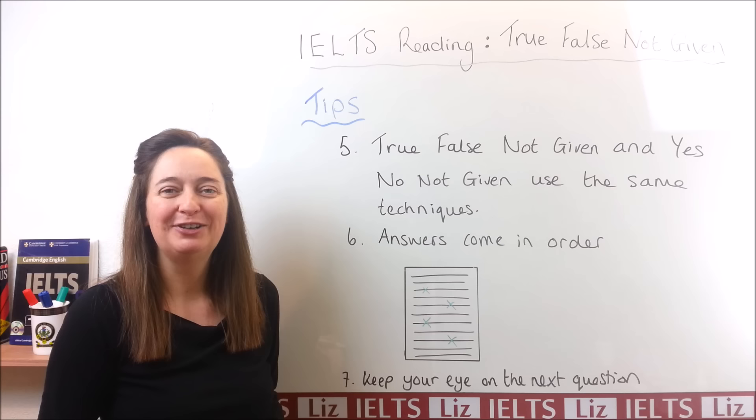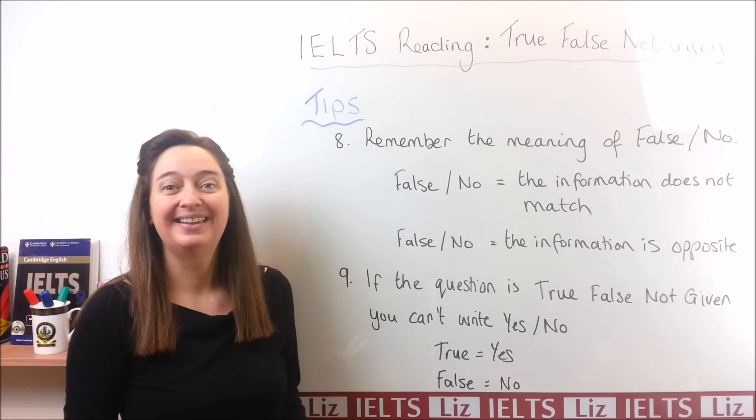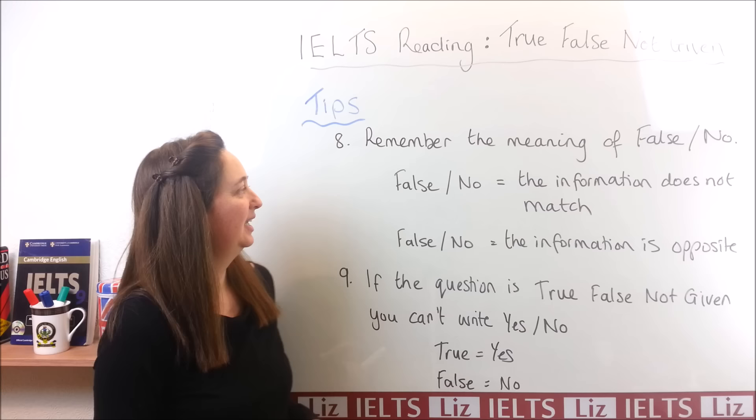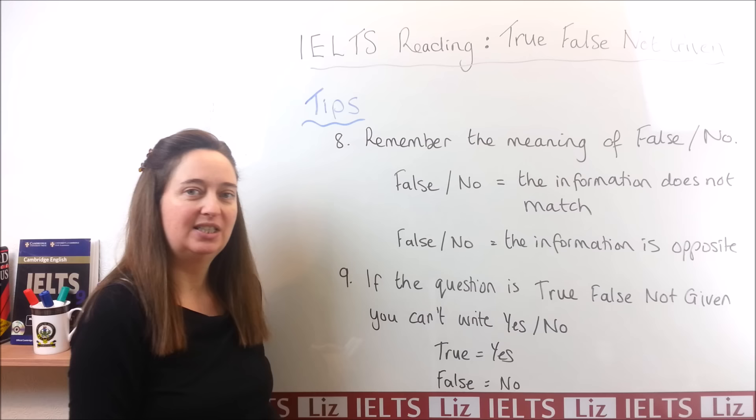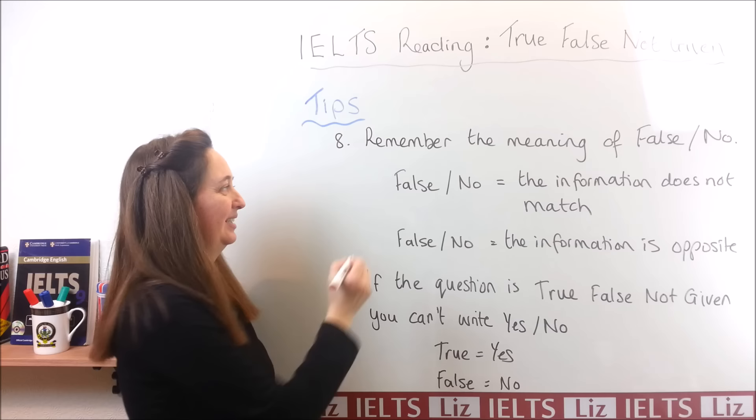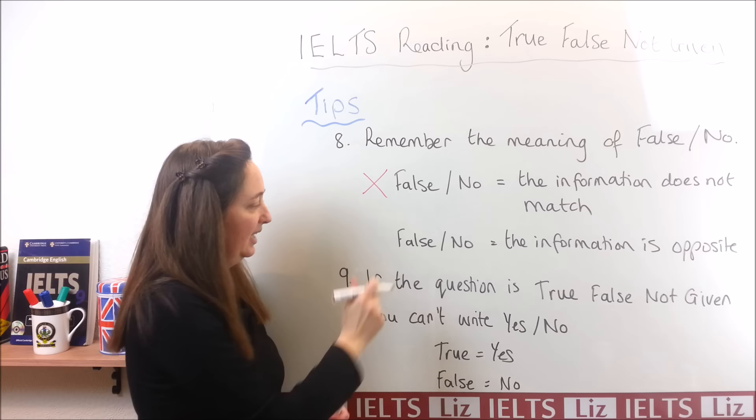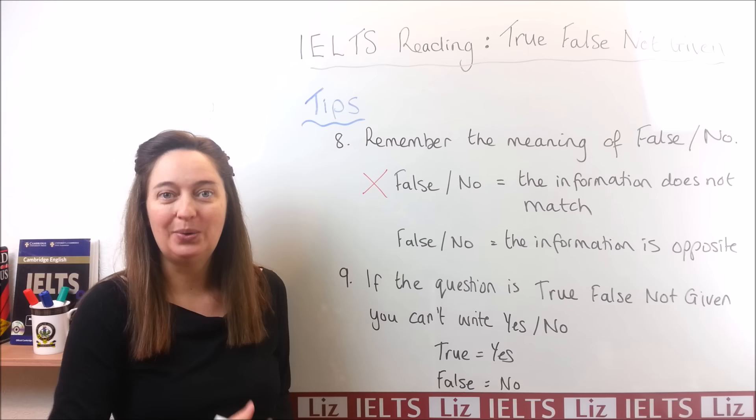Tip number eight: remember the meaning of false and no. Many students think that the meaning of false and no is that the information does not match — that is not the meaning. The meaning of false and no is that the information is opposite, so it contradicts. You need to remember that and keep your eye on it — it's about an opposite or contradictory meaning.